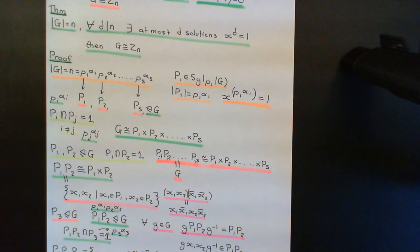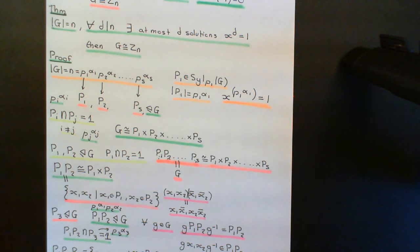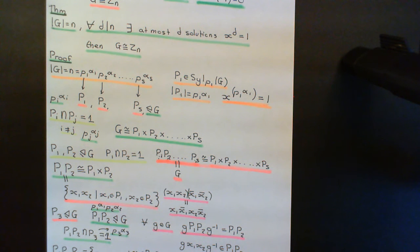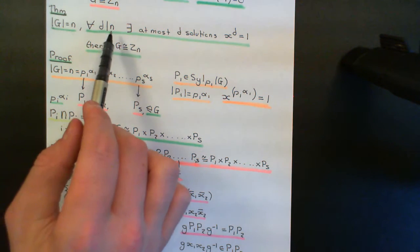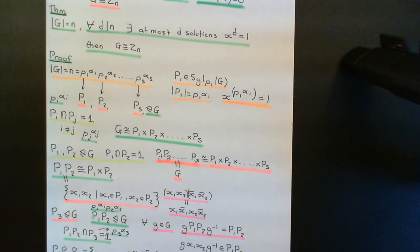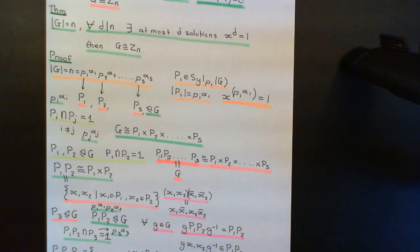Welcome back to this next video in which we are discussing finite multiplicative subgroups of a field and trying to prove that they are always cyclic groups. Remember the way in which we are trying to prove this is by proving this relative theorem in group theory: if you have a finite group which obeys the property that for any natural number d dividing the order n, there exist at most d solutions to x^d = 1, then you can conclude that your finite group is isomorphic to the cyclic group of the same order.